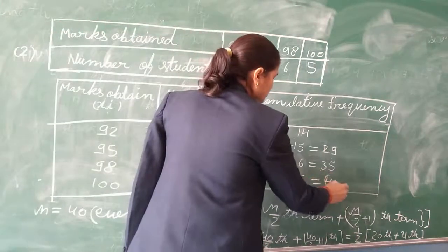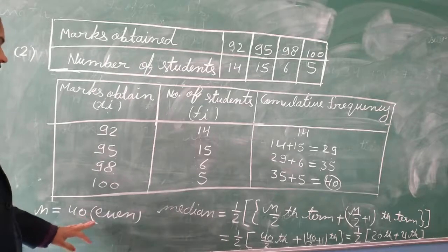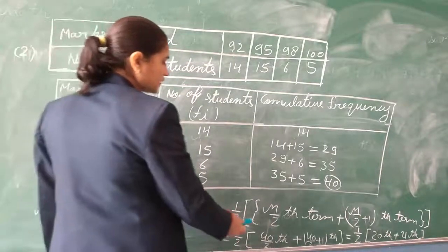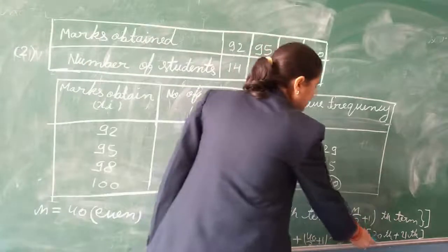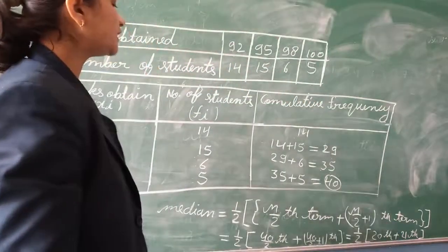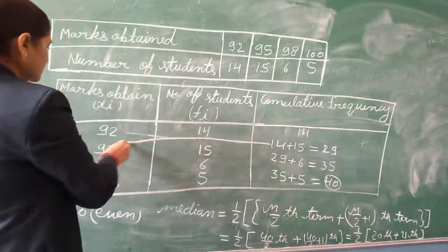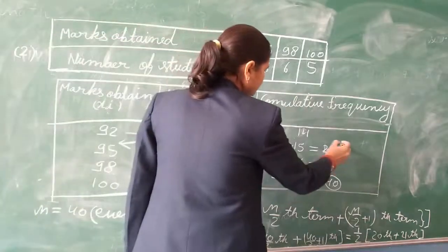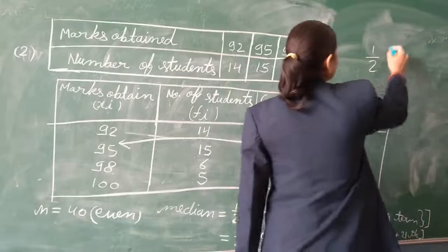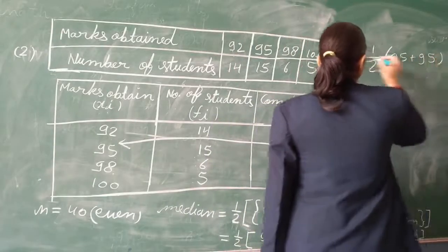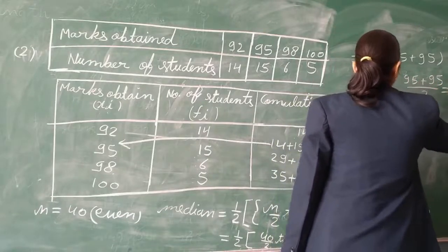With 40 total observations, n is even. We use the formula: mean of n/2 and (n/2 + 1) terms. Putting n=40, we need to observe the 20th and 21st terms. Both the 20th and 21st fall within the cumulative frequency of 29 at marks 95. So the mean of 95 and 95 divided by 2 gives median = 95. The required median is 95.